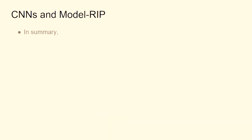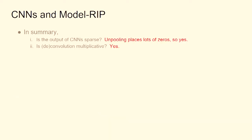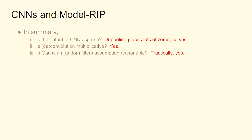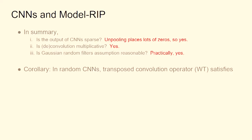To summarize what we've done: we've argued the output of CNNs is sparse, convolution is linear and linear algebra is great, and in practice assuming Gaussian random filters is a reasonable mathematical assumption to make. Let's go to work.